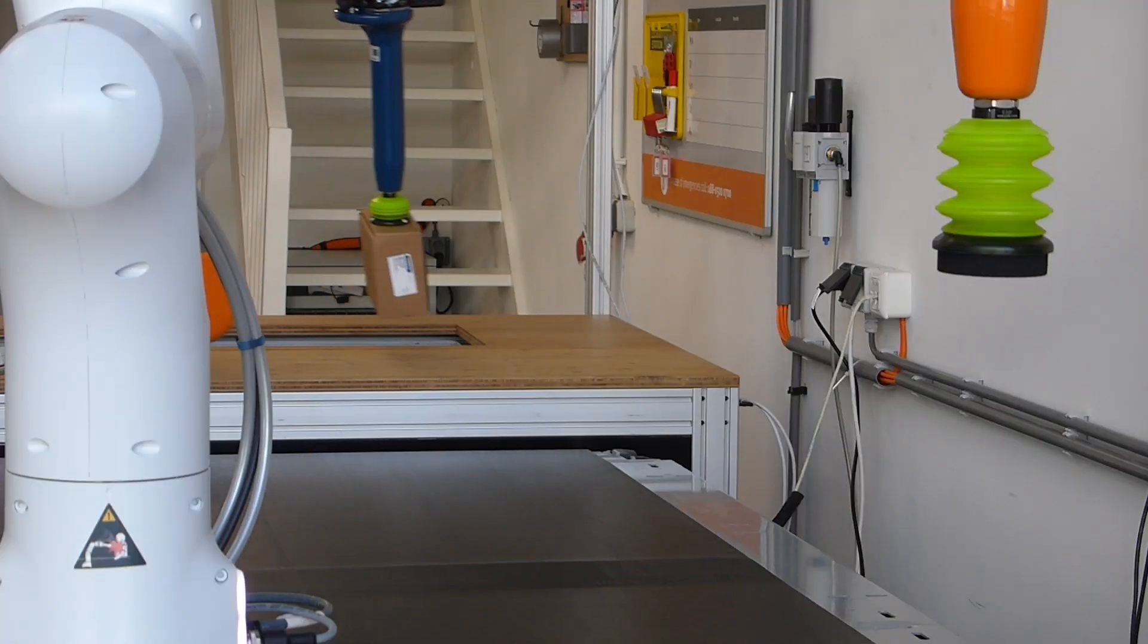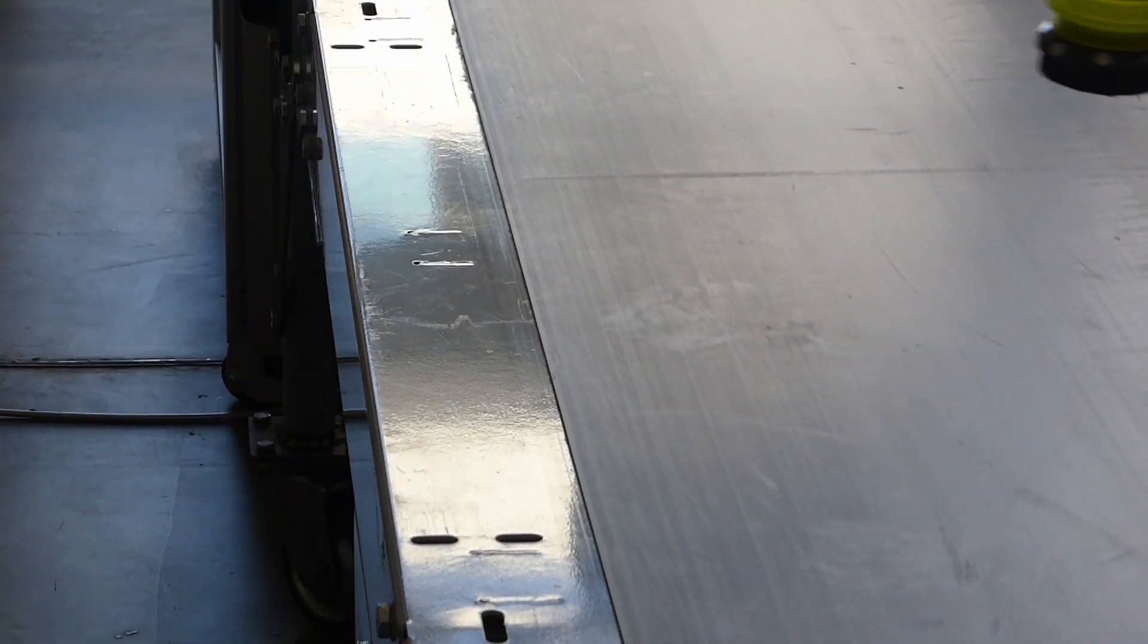But for robotic systems this is in fact a very complicated task, especially when we start tossing boxes which can tumble, which leads to unpredictable behavior.